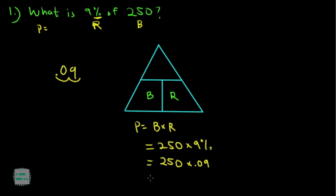So you have 250 multiplied by 0.09, and you can use your calculator to speed things up. You'll get the value of your percentage, which is 22.5.